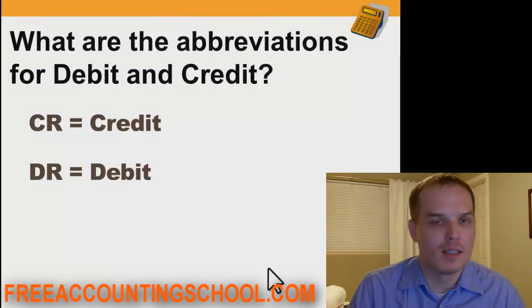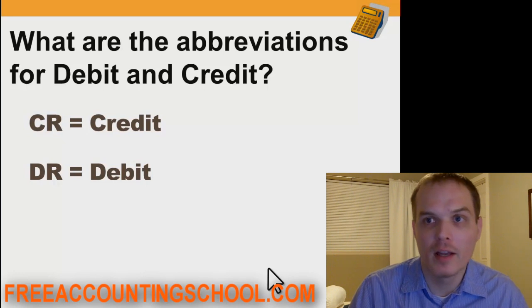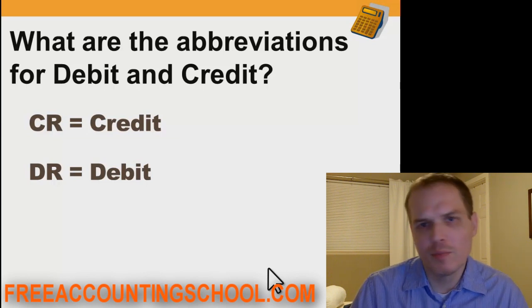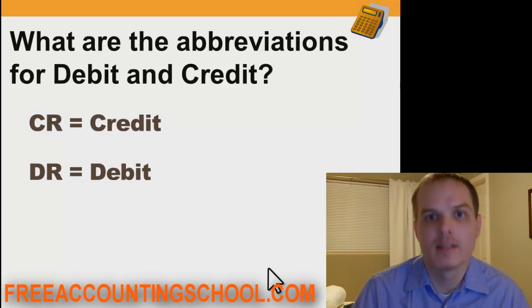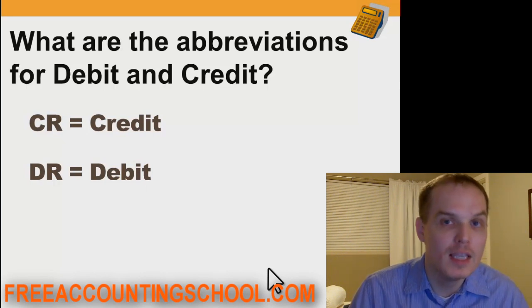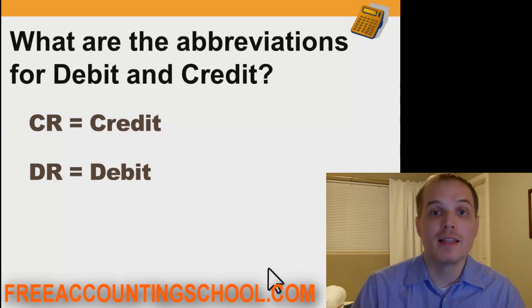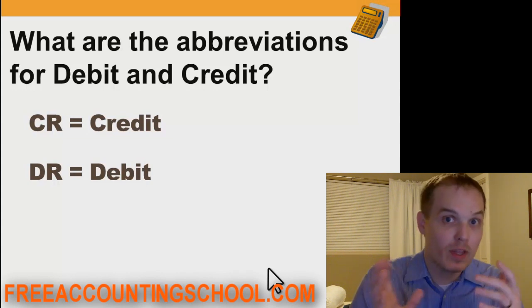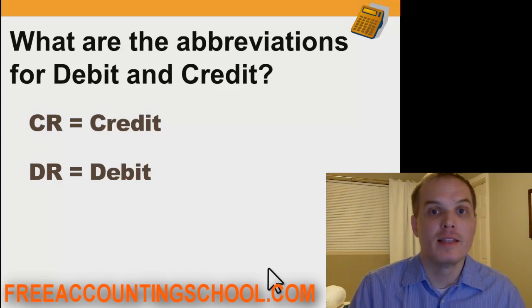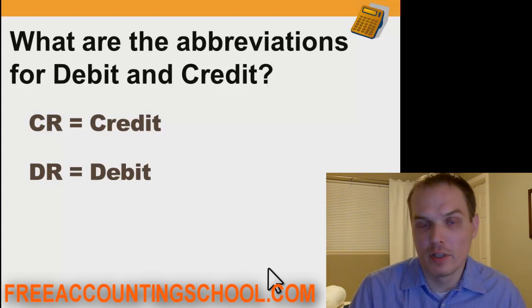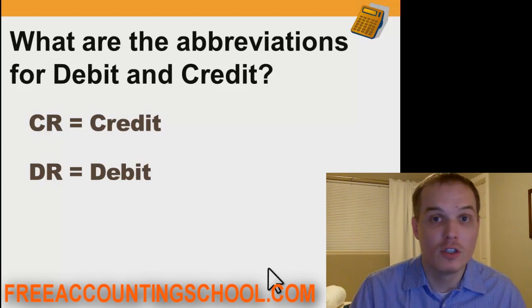In accounting we do lots of debits and lots of credits, so we use abbreviations for the words debit and credit because we don't want to write out the full word. The abbreviation for credit is CR, which makes sense. But the abbreviation for debit is DR, which is kind of weird, because there's no R in the word debit. The reason for it is that in Latin, when they first started using the word debit, they did it in Latin, and the word in Latin is debere — D-E-B-E-R-E. There is an R in the Latin word debere, and so that tradition just kind of stuck to use the shortened abbreviation DR for debit.